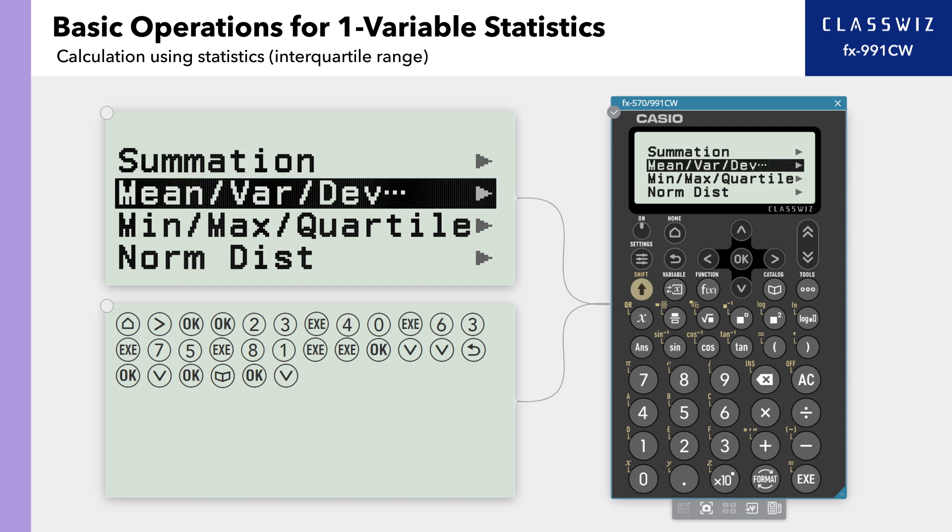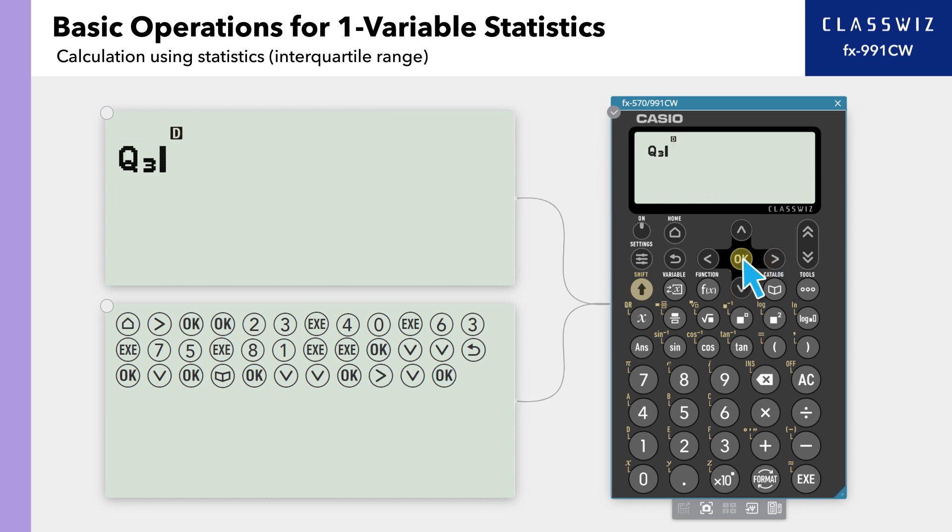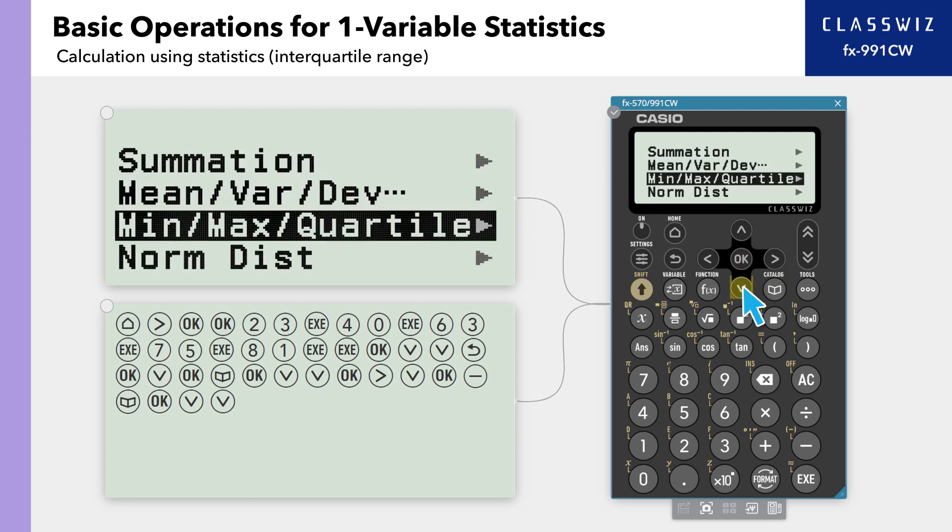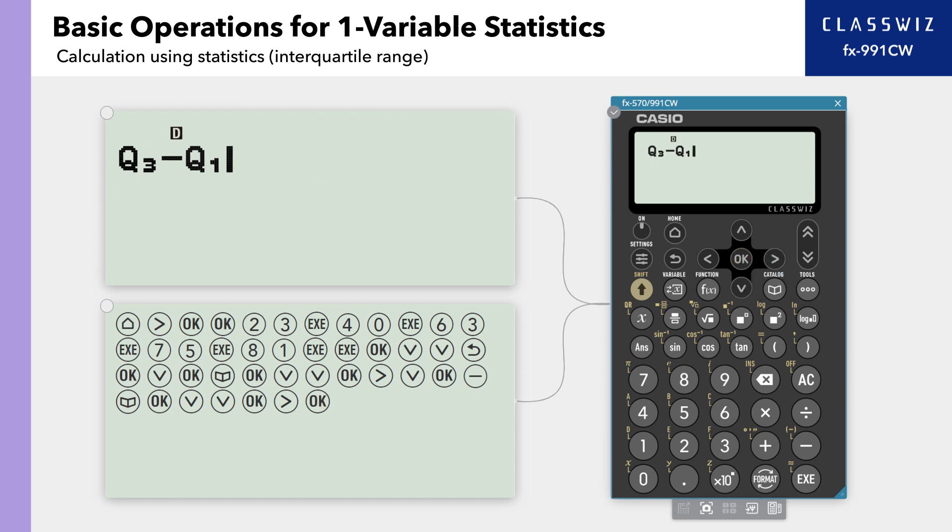Select minimum, maximum quartile, then select the third quartile. Enter minus on the calculation screen. Then, go to the catalog once again to select the first quartile. We can see that the third quartile minus the first quartile appears on the calculation screen.